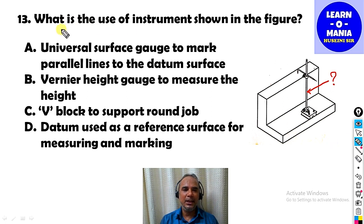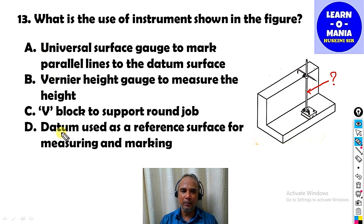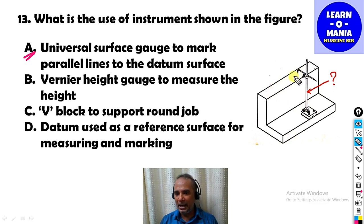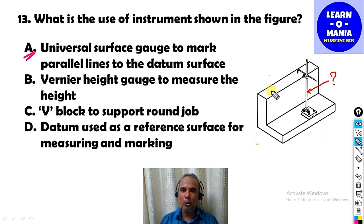Our next MCQ: What is the use of the instrument shown in the figure? The answer is option A — this is called a universal surface gauge. It is used to draw parallel lines on a job with respect to a datum (reference surface).